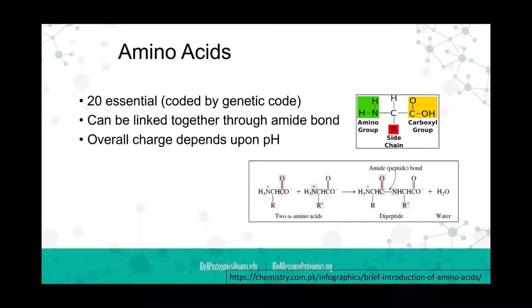There are 20 essential amino acids, which means they're coded by our genetic code from DNA. They can be linked together through this amide bond. You have the amine group on one side and the carboxylic group on the other side. When you link those two together, you have alpha amino acids, because that carbon in the middle is the alpha carbon. Through this chemistry that produces a water molecule, you have a new bond form called an amide or peptide bond. Where you have two amino acids, now you have one dipeptide.